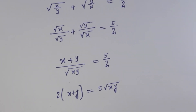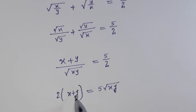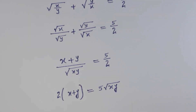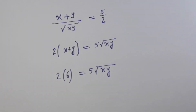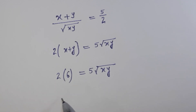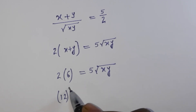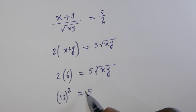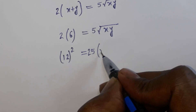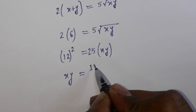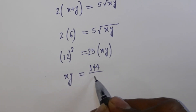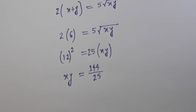Using equation 2, x + y = 6, we substitute into equation 1: 2 × 6 = 5·root(xy), so 12 = 5·root(xy). To remove the root we square both sides: 144 = 25·xy. Therefore xy = 144/25.